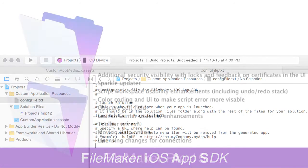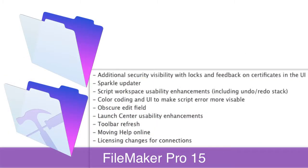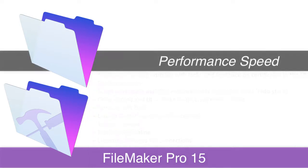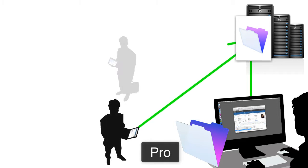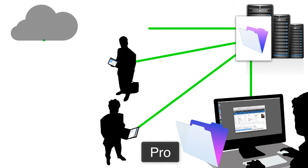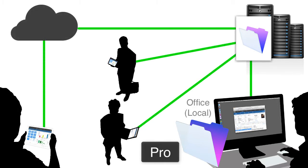With FileMaker Pro there's a whole stack of important upgrades, and they're all incremental improvements to the product. The biggest one I want to point out is a radical improvement in performance when FileMaker Pro is connecting to a database hosted on a server out on the internet — i.e., the database is not in your office on a server; it's at a different office, in the cloud, or somewhere else.